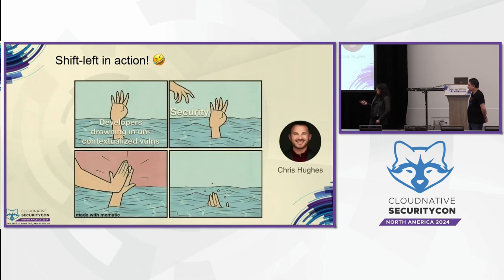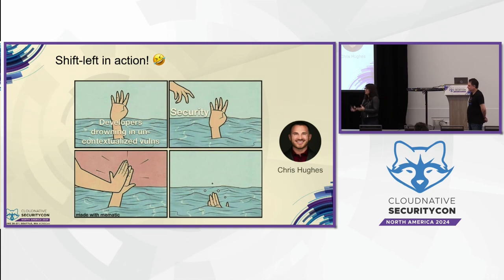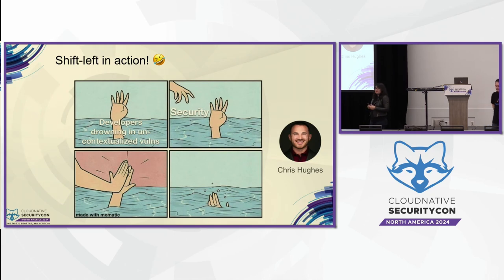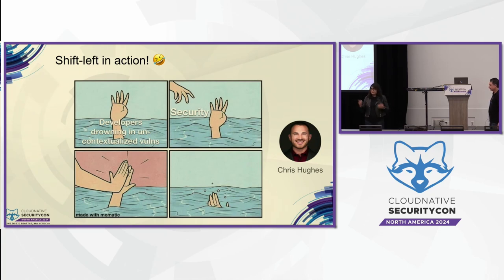We expect too much from our developers. They have to be full-stack, know front-end and back-end, understand configurations, scale systems, handle availability, reliability, load balancing, networking, and understand layer 7 security — all of that. On top of that, we have thousands of vulnerabilities showing up with not much context, and developers have to learn new applications and container platforms. There is a problem with shifting everything left to developers and expecting them to know everything and be happy about it.